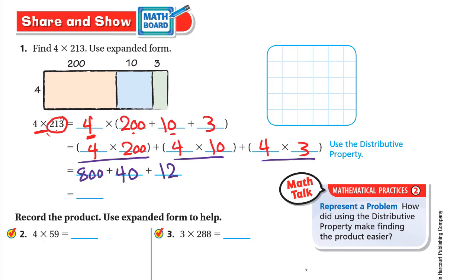Now we add 800 plus 40 plus 12. So 0 plus 0 plus 2 is 2, 0 plus 4 plus 1 is 5, and 8 plus nothing is 8. The answer is 852.